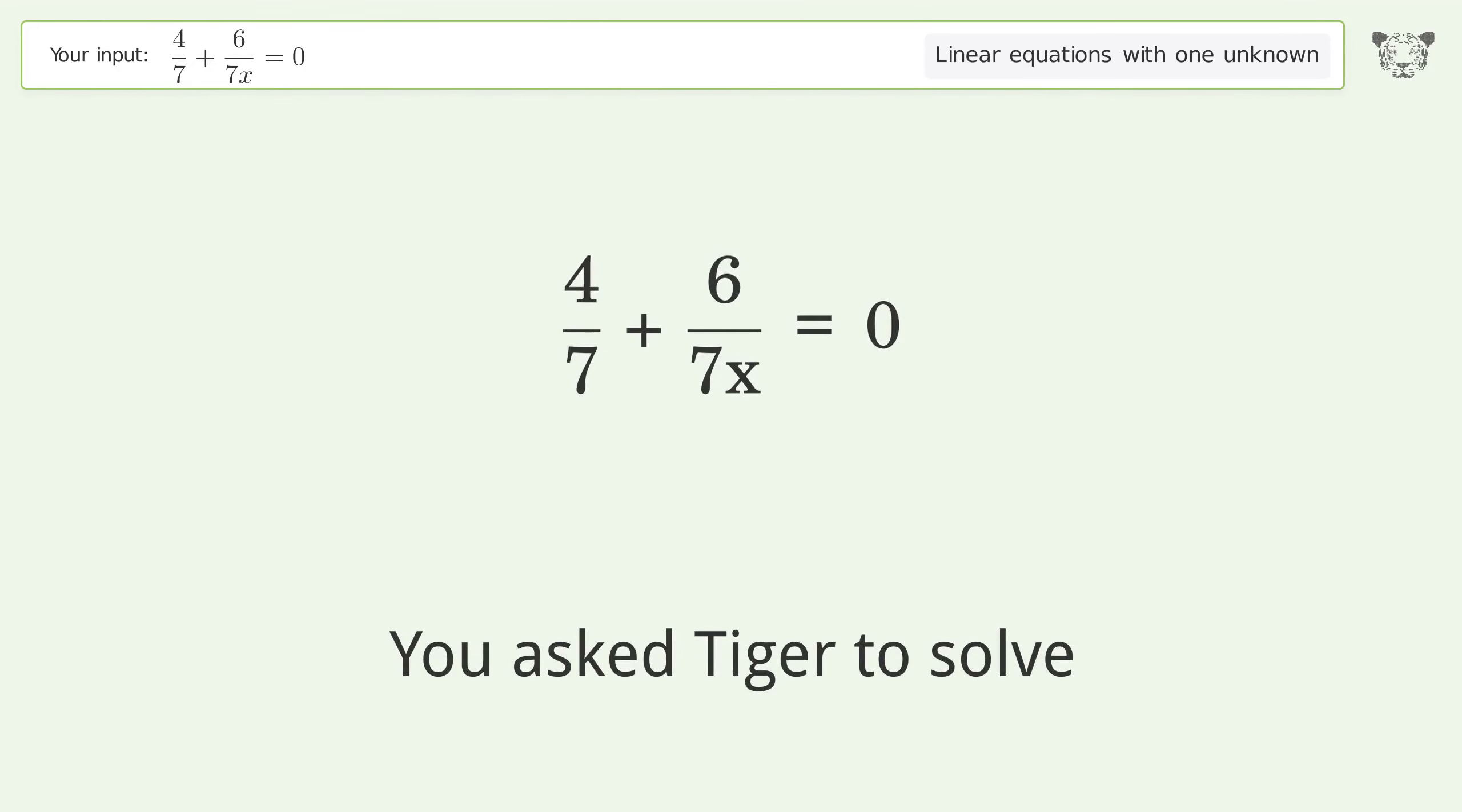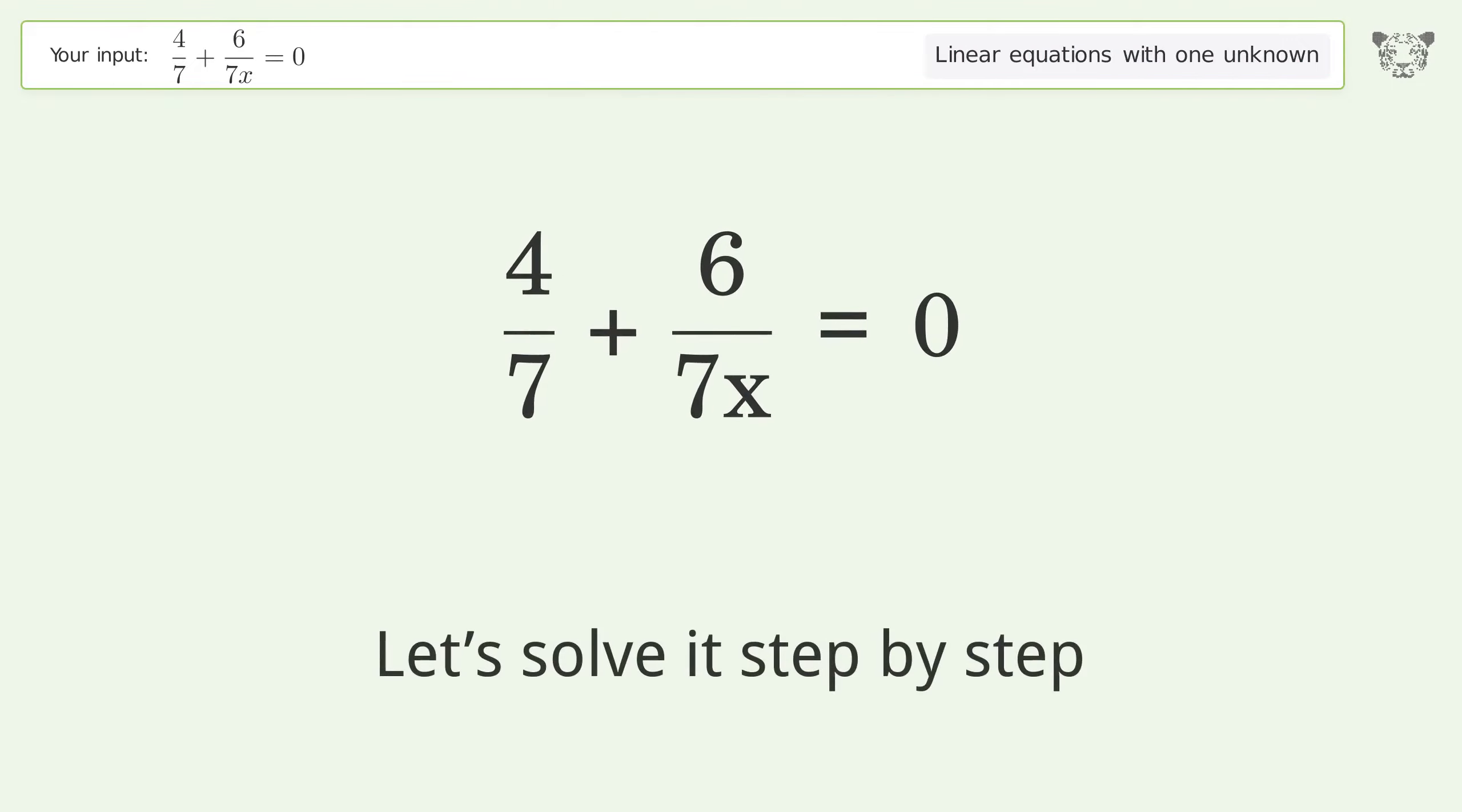You asked Tiger to solve this. It deals with linear equations with one unknown. The final result is x equals negative 3 over 2. Let's solve it step by step.